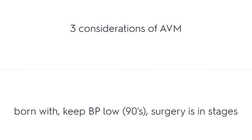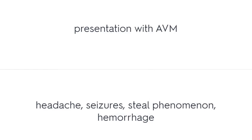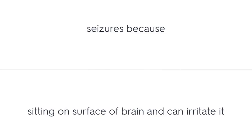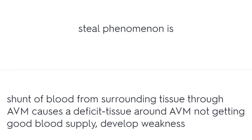Three considerations of AVM: born with the defect, keep BP low, and surgery is done in stages. Presentation of AVM includes headache, seizures, steal phenomenon, and hemorrhage. Seizures occur because the AVM sits on the surface of the brain and irritates it. Steal phenomenon is a shunt of blood from surrounding tissue through the AVM, causing a deficit in the tissue around the AVM — the surrounding tissue is not getting a good blood supply, leading to weakness.